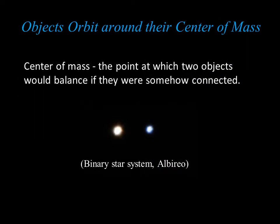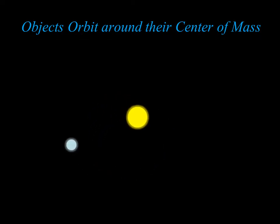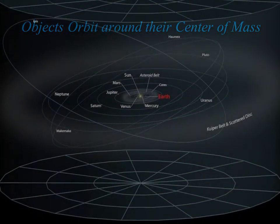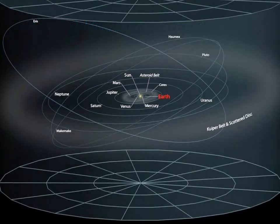We usually think of one object orbiting another object, like a planet orbiting the Sun. But Newton showed that two objects attracted by gravity actually both orbit around their common center of mass — the point at which the two objects would balance if they were somehow connected. When one object is more massive than the other, the center of mass lies closer to the more massive object. The idea holds even for the Sun and planets; the Sun is so much more massive that the center of mass between the Sun and any planet lies inside the Sun.